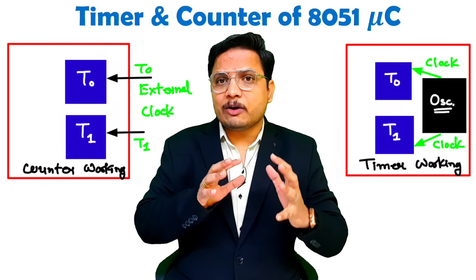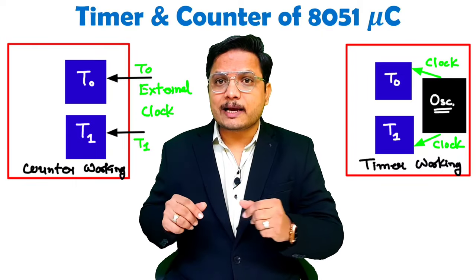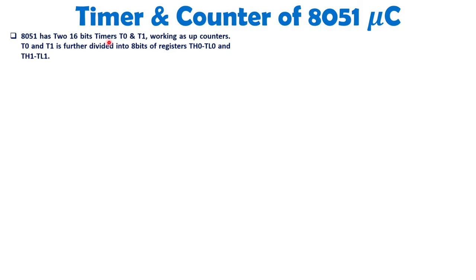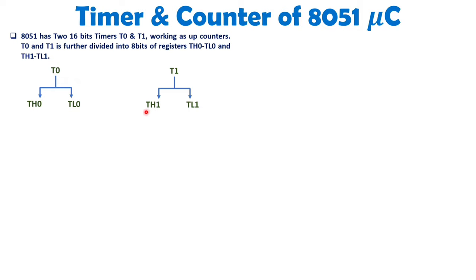Now I will explain step by step how these timers and counters work inside 8051. The 8051 has two 16-bit timers, T0 and T1, working as up counters. Each timer is further divided into two 8-bit registers: T0 is split into TH0 (higher byte) and TL0 (lower byte), and T1 is split into TH1 (higher byte) and TL1 (lower byte).